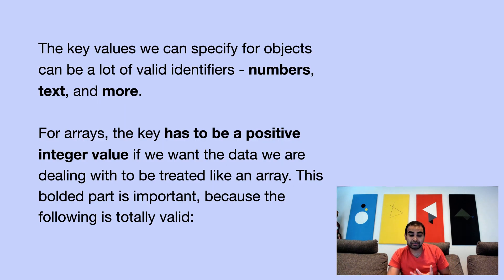So the key values we can specify for objects, there can be a lot of valid identifiers. We saw that in the previous example, where they go from numbers to text and all sorts of things. For arrays, though, the rules are more specific. The key has to be a positive integer value. So if you want the data that we're dealing with to be treated like an array, this bolded part is important because the following is totally valid.